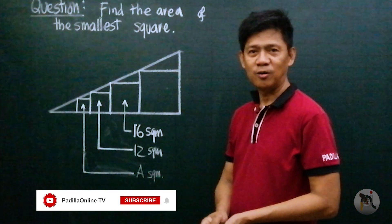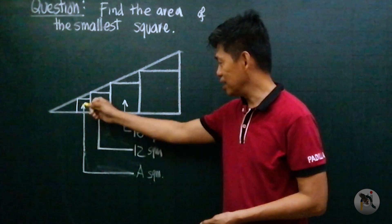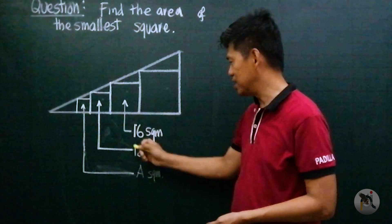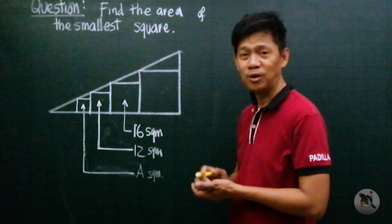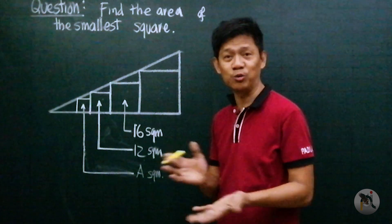So in this figure we want to find the area of the small square. This one is 12, this one is 16 square meters. This is unknown. We want A, the area of the small square. How do we solve this?